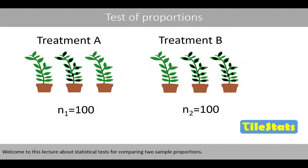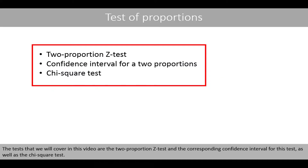Welcome to this lecture about statistical tests for comparing two sample proportions. The tests that we will cover in this video are the two proportions Z test and the corresponding confidence interval for this test, as well as the chi-square test.